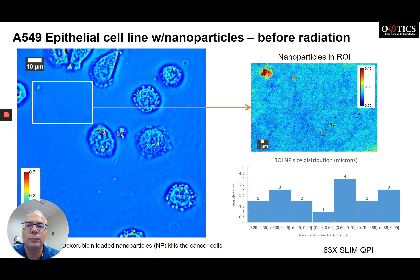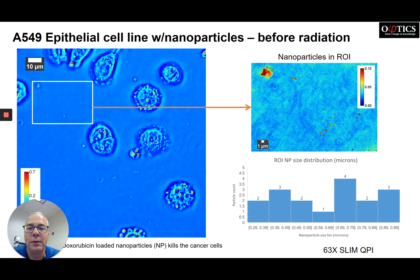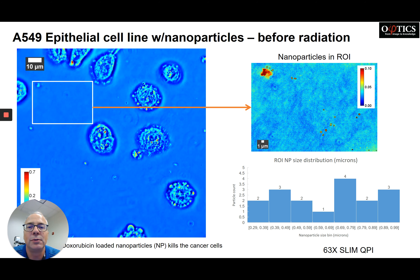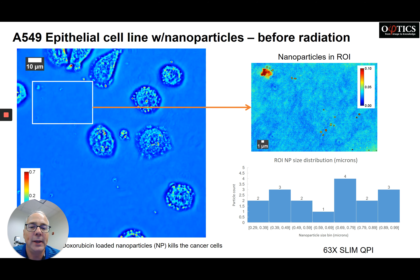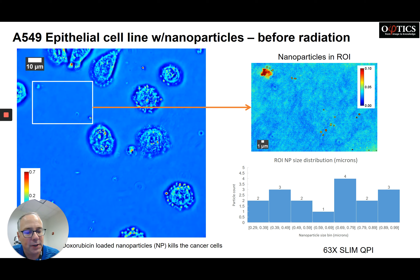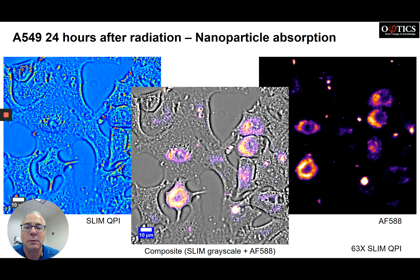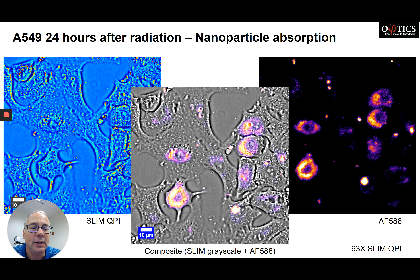Here are some A549 epithelial cells with nanoparticles before radiation, imaged with the 63x SLIM module. Here's 24 hours after radiation — you can see the nanoparticle absorption. SLIM is on the left, Alexa 588 on the right, and the overlay in the center.